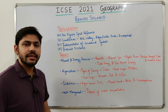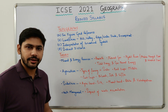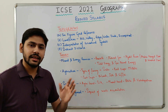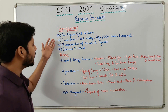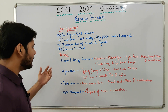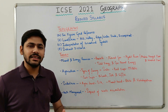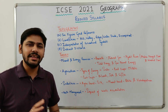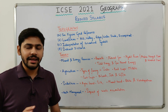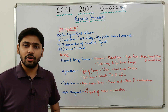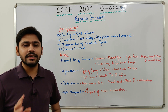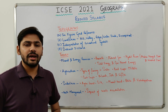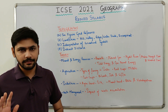Let's begin with the reduced syllabus for geography. We are going to discuss the removed portions from topography and theory. We are not discussing the removed portions from map pointing because many things have been removed from map pointing and it would have taken a lot of time. A link in the description box below allows you to check the reduced syllabus.